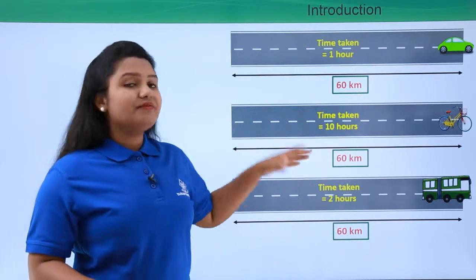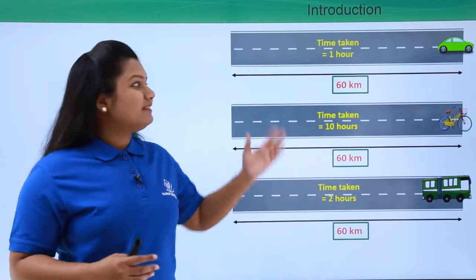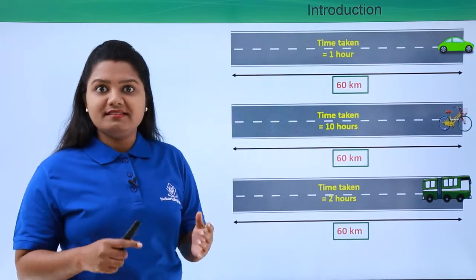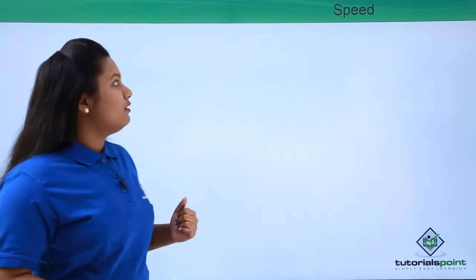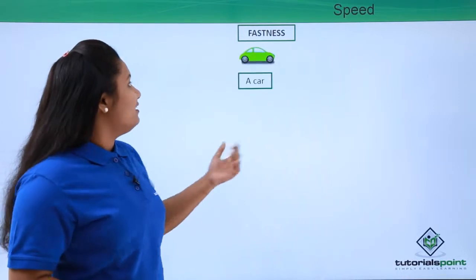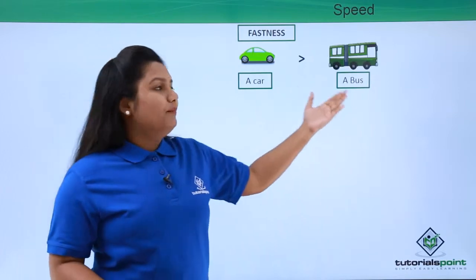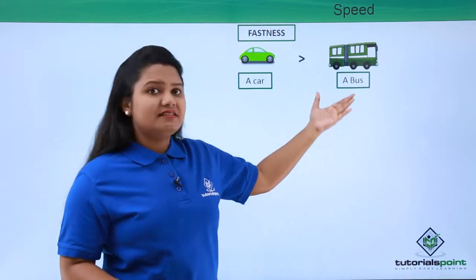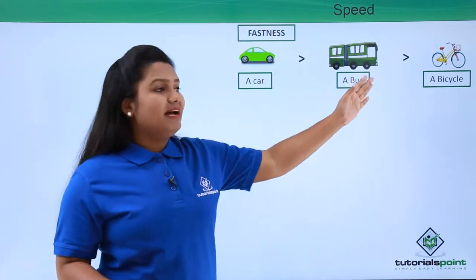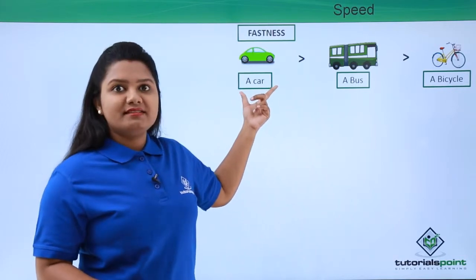From here we can figure out that different objects may take different time to cover the same distance, and it all depends upon how fast an object is in moving. The fastness of an object matters here — the car was faster than the bus, and the bus was faster than the bicycle. So the bicycle is the slowest in motion and the car was the fastest.